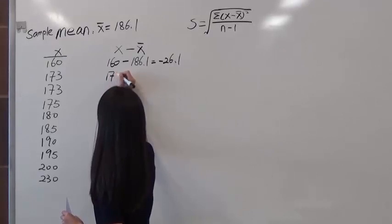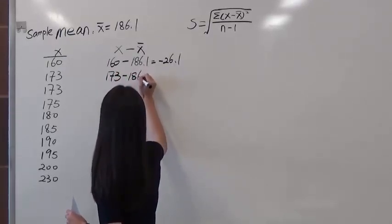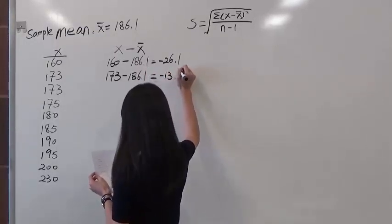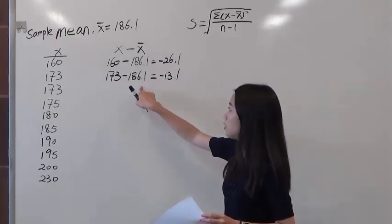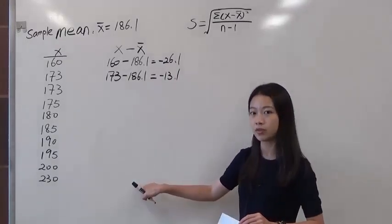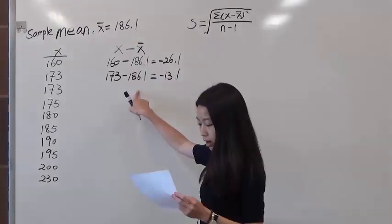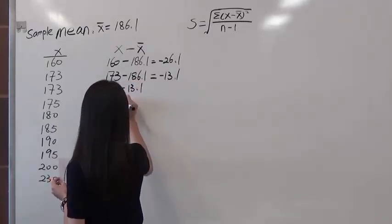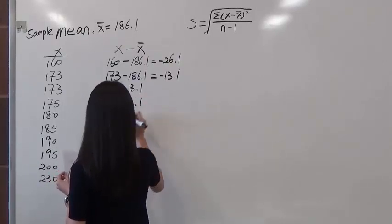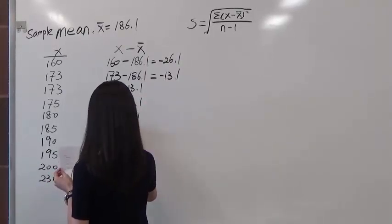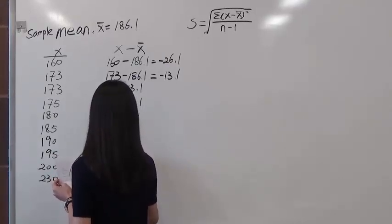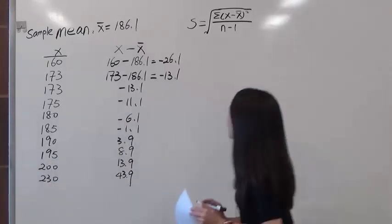So in here, we will have 173 minus 186.1, we'll have negative 13.1. Keep following the same idea so you can do the rest of the calculation. In here, I would just write all the answers, which is negative 13.1, negative 11.1...